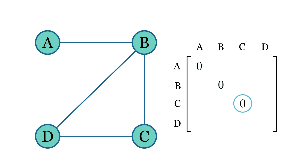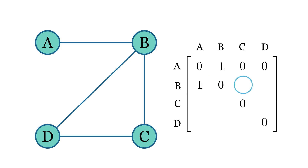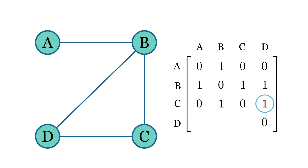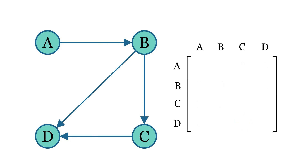We'll do the same for all the diagonal elements, as they represent self-loops. This cell represents whether there is an edge from node A to node B. Since there is an edge here, we mark it with a 1, and we similarly fill all the cells based on the presence or absence of edges. In an undirected graph, going from one node to another is the same as returning from that node, so the matrix will be symmetrical. However, in a directed graph, an edge can only go in one direction, so we fill the matrix accordingly, without symmetry.